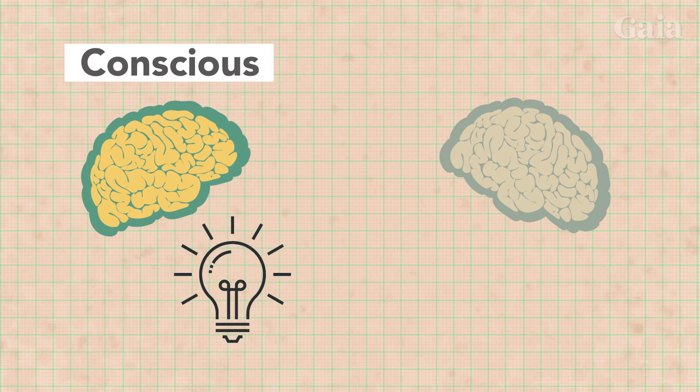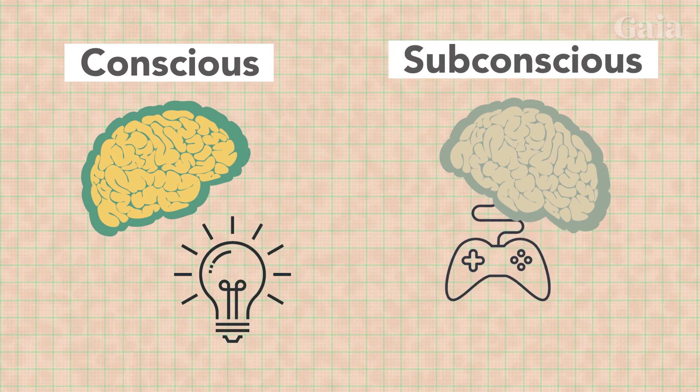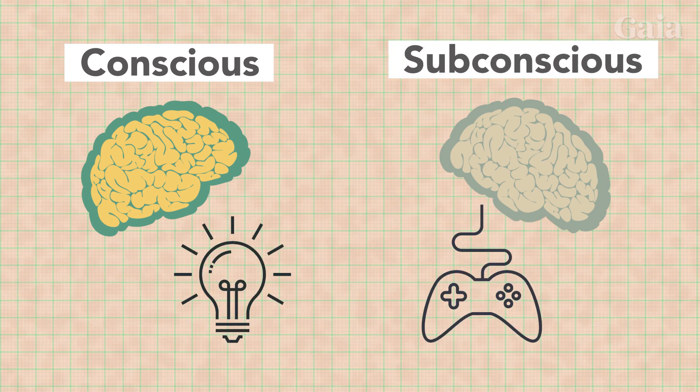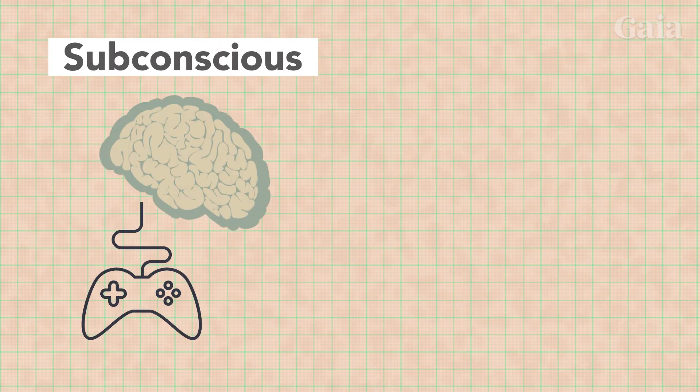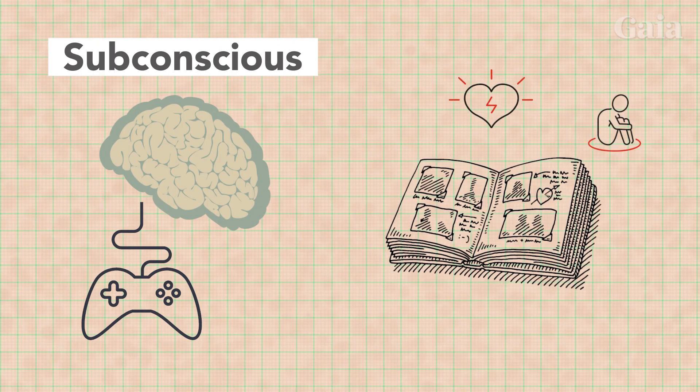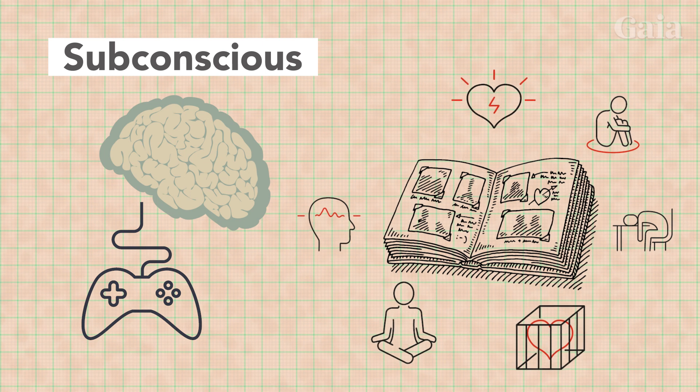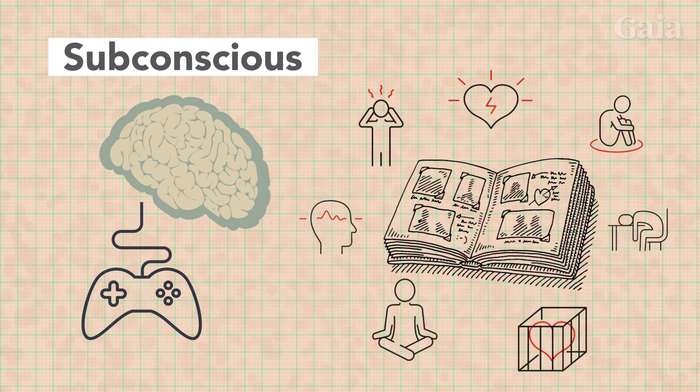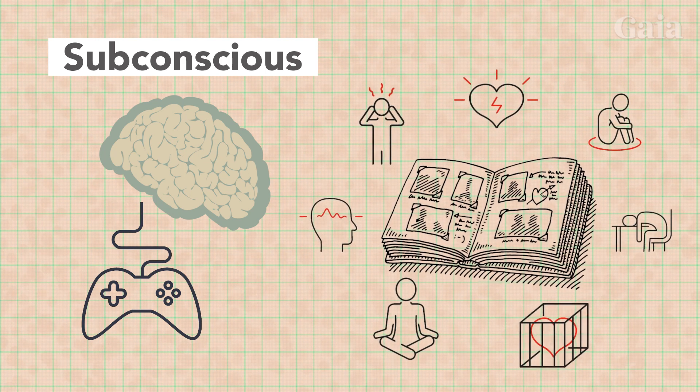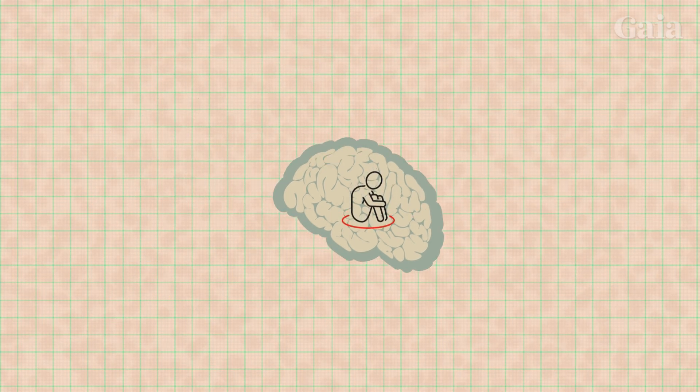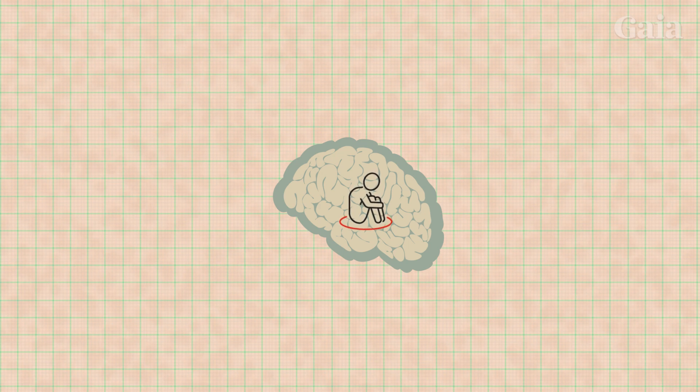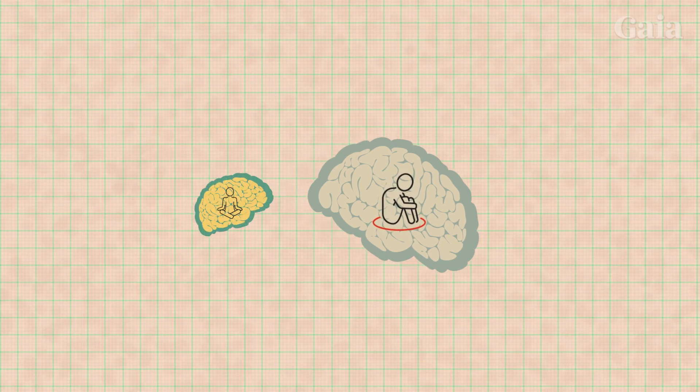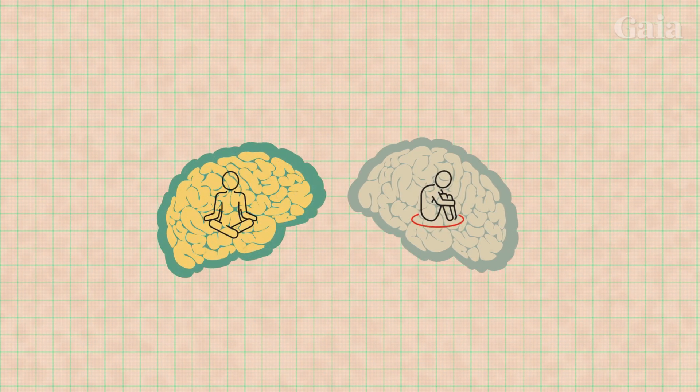Our conscious mind is where we generate thoughts. But our subconscious mind is actually where most of our instructions are coming from, whether we realize it or not. Our subconscious mind acts out of habits and experiences that are formed over a lifetime, but most of which are programmed before we even reach adolescence. It's where we store all of our fears and past traumas. So it's no surprise that it might be operating under disempowering programs, which conflict with the best intentions of our conscious mind.